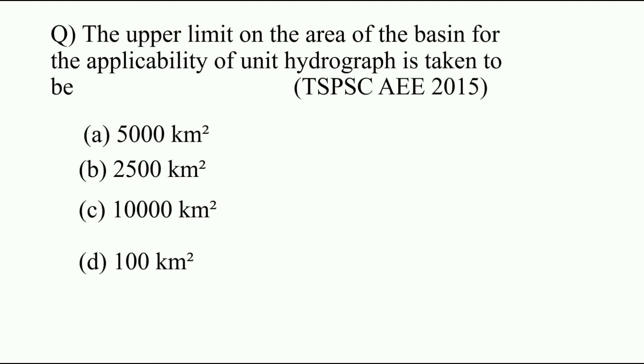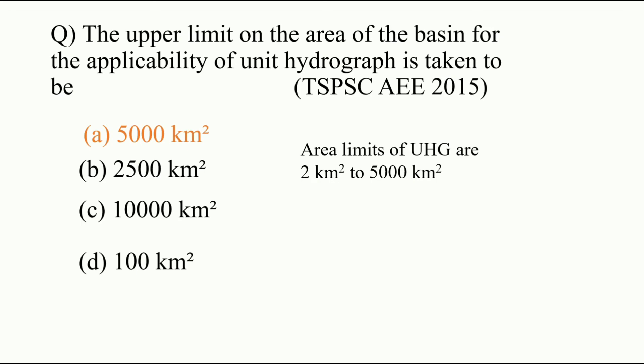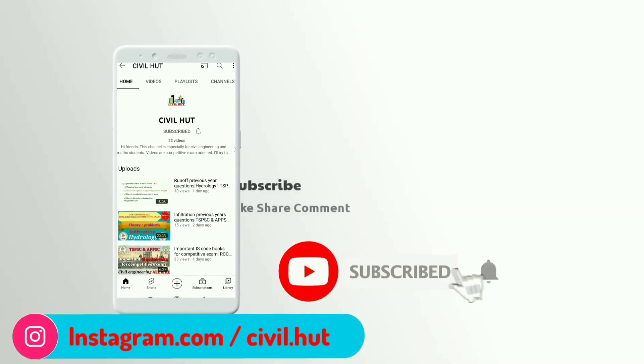Next question: the upper limit on the area of the basin for the applicability of the unit hydrograph is — a) 5000 km², b) 2500 km², c) 10,000 km², d) 100 km². The limits of the unit hydrograph are 2 km² as the lower limit and 5000 km² as the upper limit. The answer is A, 5000 km². Remember: 2 km² is the least limit and 5000 km² is the upper limit. Thank you for watching, please subscribe to my channel.